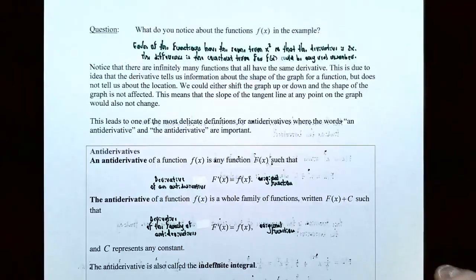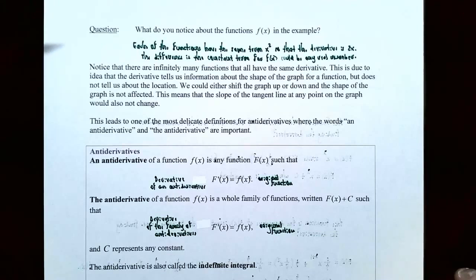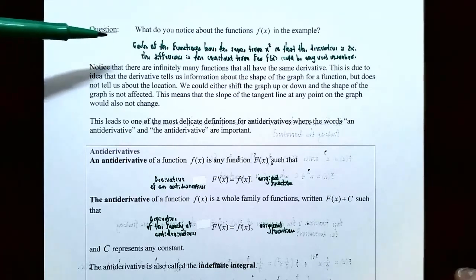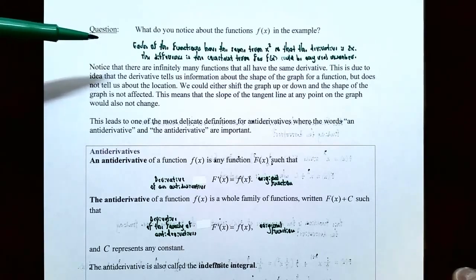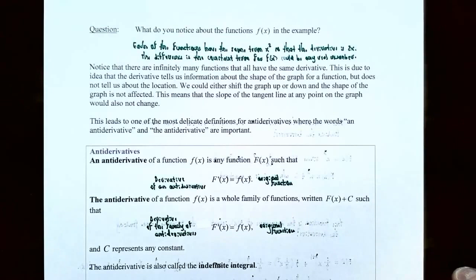So you might be wondering, what's the point of this last example? We had x squared in every single function and we know the derivative of x squared is 2x and the derivative of a constant is 0. What do you notice about the functions f of x? Each of the functions have the same term x squared because the derivative of x squared is 2x. But the differences between all four functions is that the constant could be 0, 3, negative pi, or 104,573.